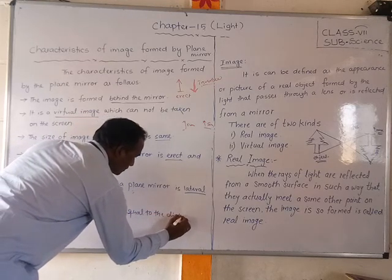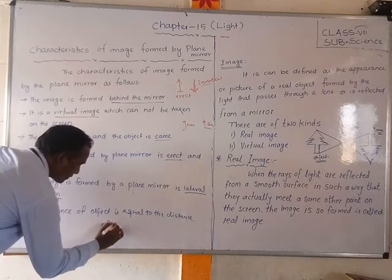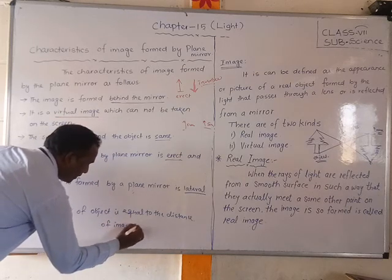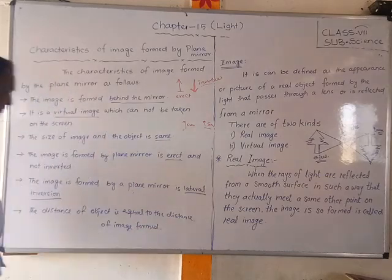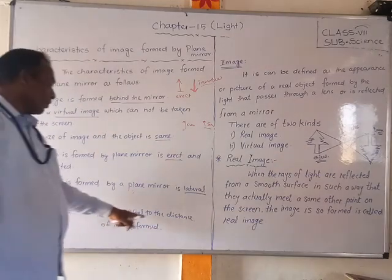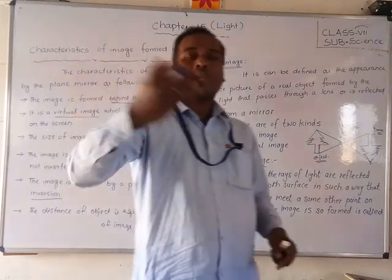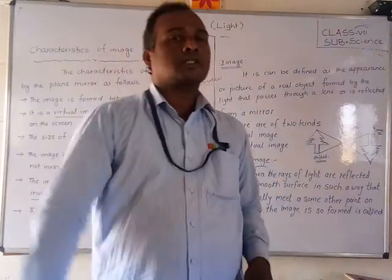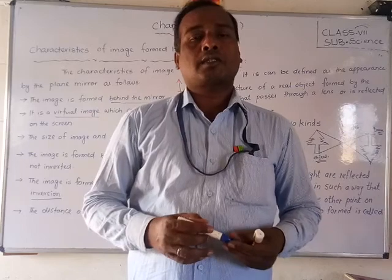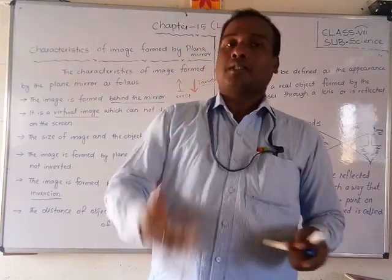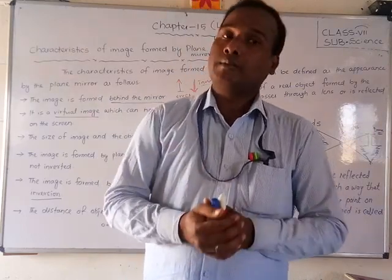The distance of the object is equal to the distance of the image. However far the object is placed from the mirror, the image forms at the same distance behind the mirror. These are all the characteristics of a plane mirror image: it forms behind the mirror, it is virtual, erect, the same size as the object, laterally inverted, and at an equal distance.